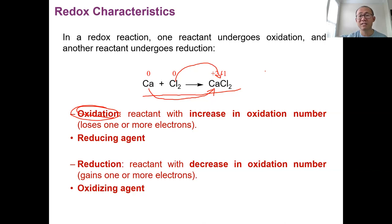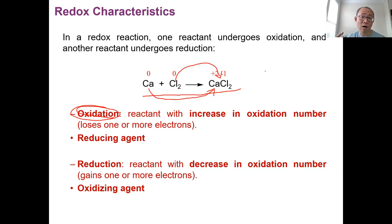Calcium is the reducing agent; chlorine is the oxidizing agent; chlorine is reduced. One more time: calcium — oxidation number increases → oxidation → loses electrons → reducing agent. Chlorine — oxidation number decreases → reduction → gains electrons → oxidizing agent. These terminologies are very important because we will work with them a lot.